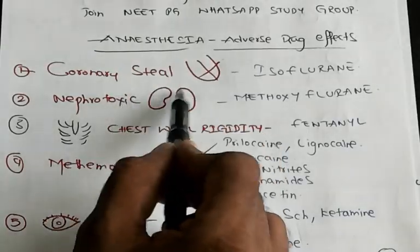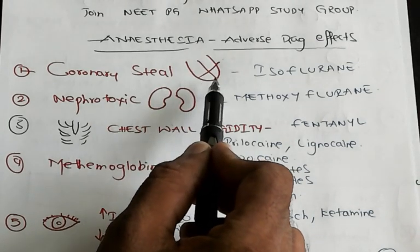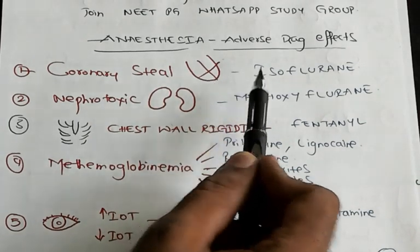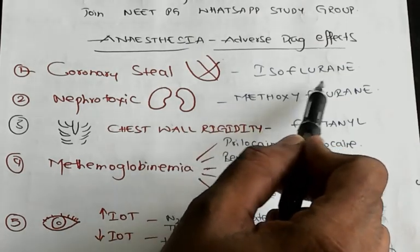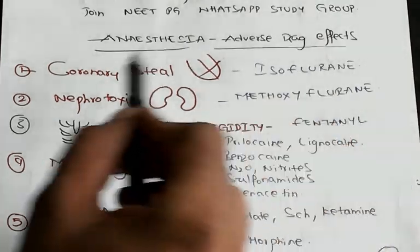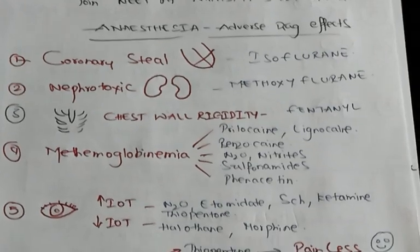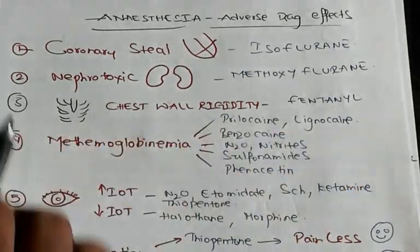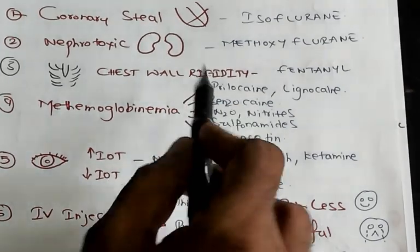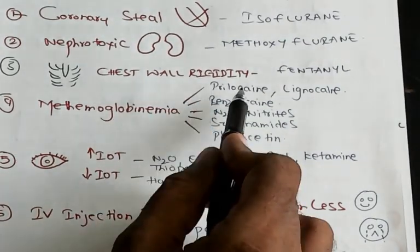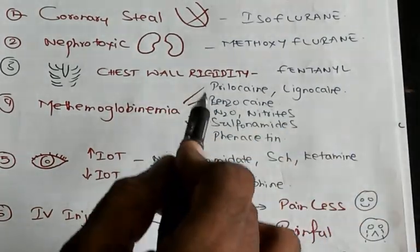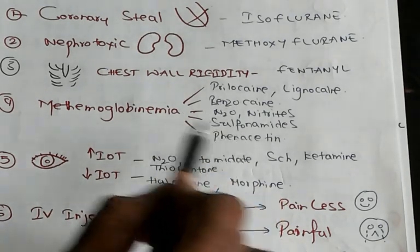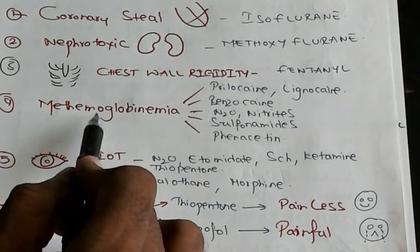Coronary steal phenomenon: isoflurane leads to coronary steal. Nephrotoxic: methoxyflurane. Chest wall rigidity: fentanyl leads to chest wall rigidity. Now there are five drugs leading to methemoglobinemia — the examiner will definitely ask about this.